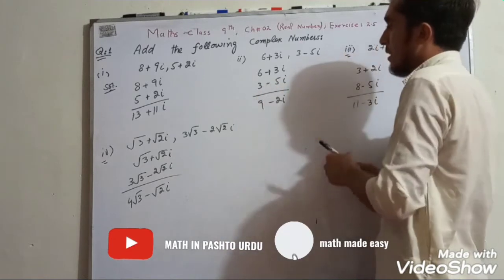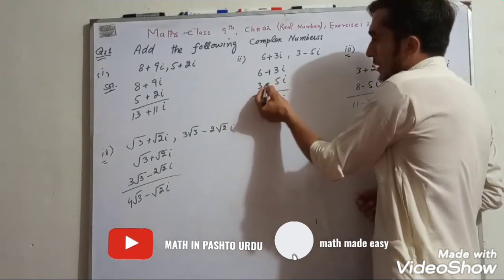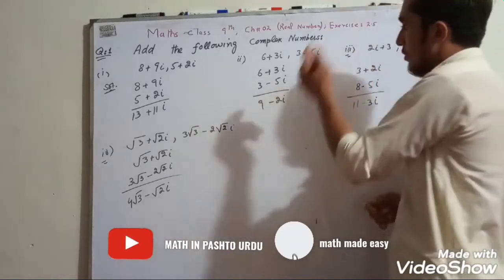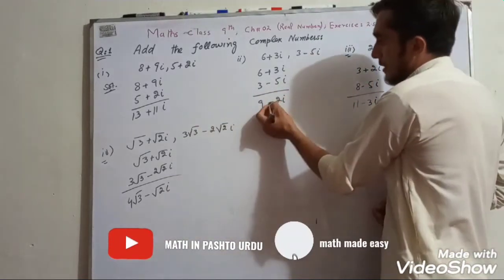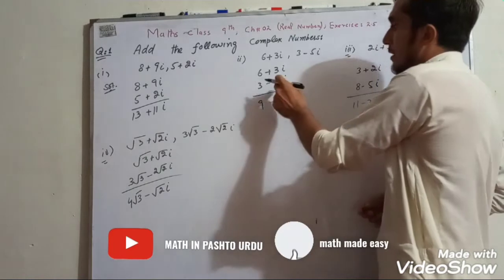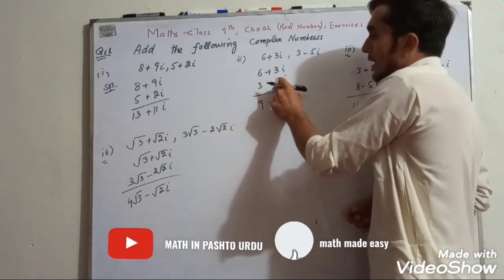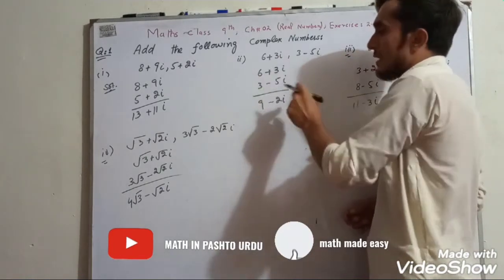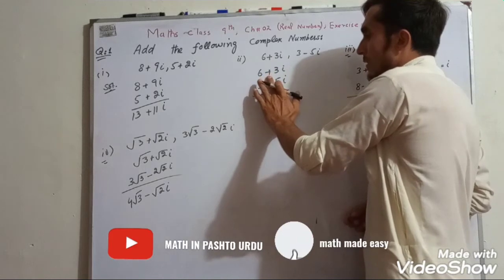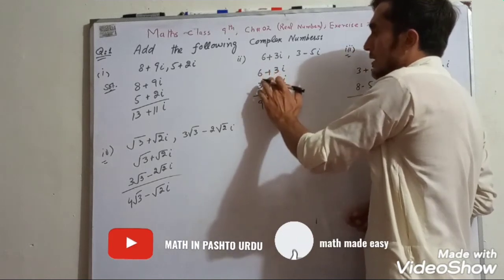The sign will be of the greatest number, which is 5. So the result takes the negative sign from the larger term.